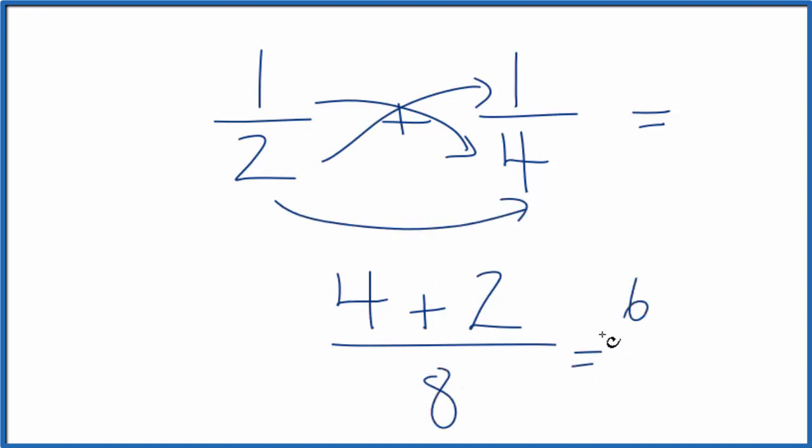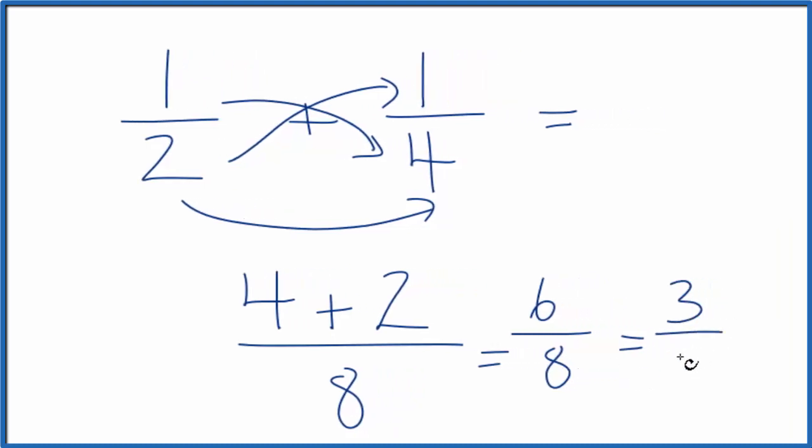We get four plus two is six over eight, but I can divide two into six and into eight. Simplify this. Two goes into six, three times. Two goes into eight, four.